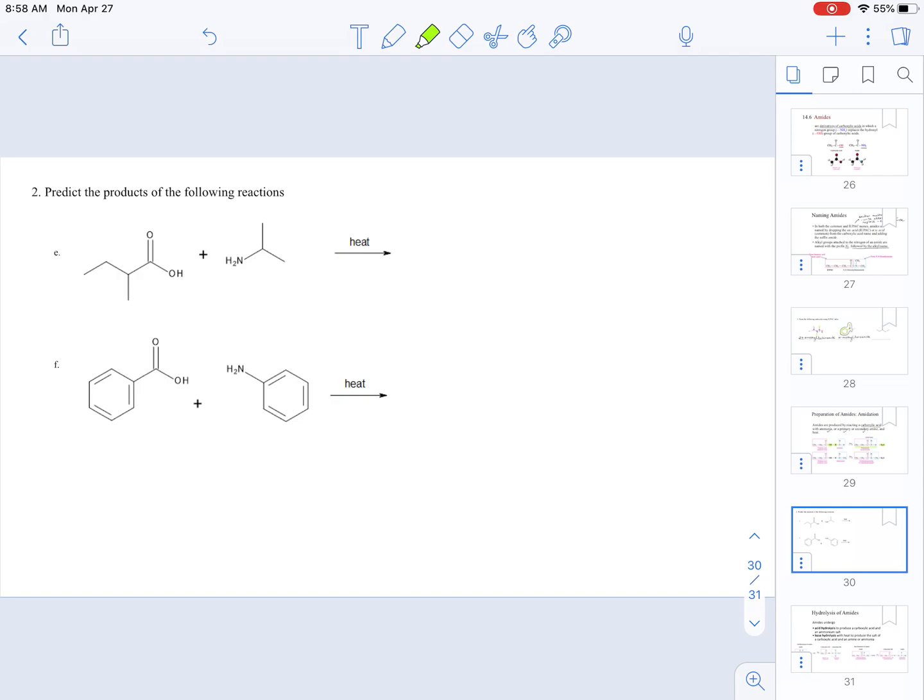Now, let's do these examples from the worksheet. So, again, when it comes to the reactions, you know that this is what is called an amidation reaction. An amidation reaction is the formation of an amide because we have a carboxylic acid and an amine. In this case, we have a primary amine.